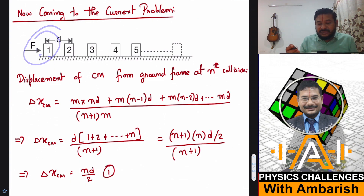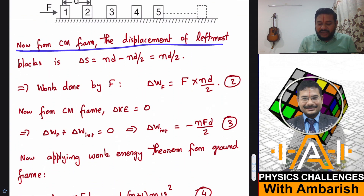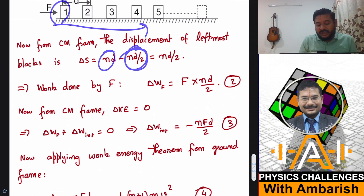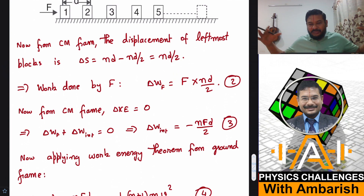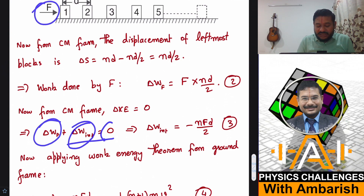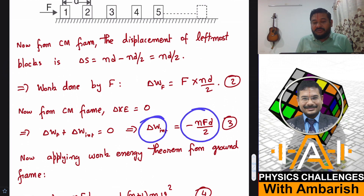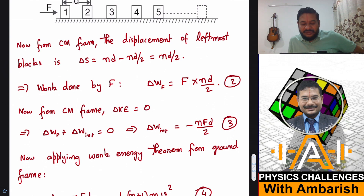From the center of mass frame: the leftmost block moved n d from the ground frame and the center of mass moved n d by 2, so the displacement of the leftmost block from the CM frame is n d minus n d by 2, giving n d by 2. Therefore, the work done by the real force F from the CM frame is F times n d by 2. After the nth collision the whole thing has become a rigid body, so there is no kinetic energy seen in the CM frame — change in KE is zero. By the work-energy theorem in the CM frame: work done by F plus work done by internal forces equals zero, so work done by internal forces equals minus F n d by 2.